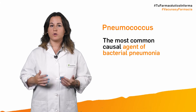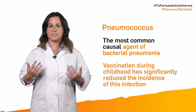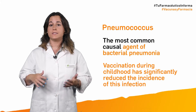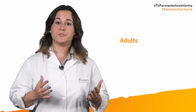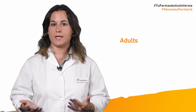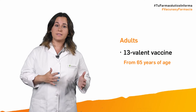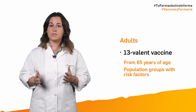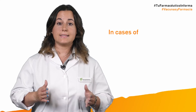Pneumococcus is the most common causal agent of bacterial pneumonia, although widespread vaccination during childhood has significantly reduced the incidence of this infection. In adults, the Ministry of Health recommends administration of the vaccine against the 23 most frequent pneumococcal serotypes, called 23-valent, from 65 years of age and in population groups with risk factors, although some regions have their own vaccination plans for these groups.